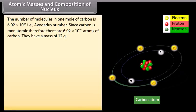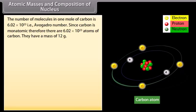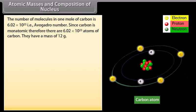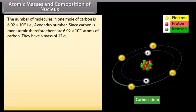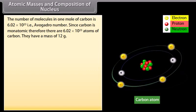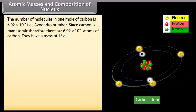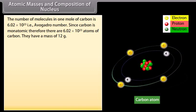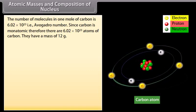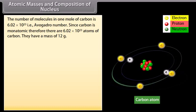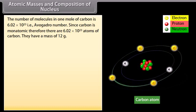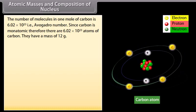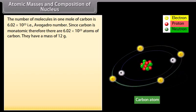The number of molecules in one mole of carbon is 6.02 × 10^23, that is Avogadro's number. Since carbon is monoatomic, therefore there are 6.02 × 10^23 atoms of carbon, and they have a mass of 12 grams.